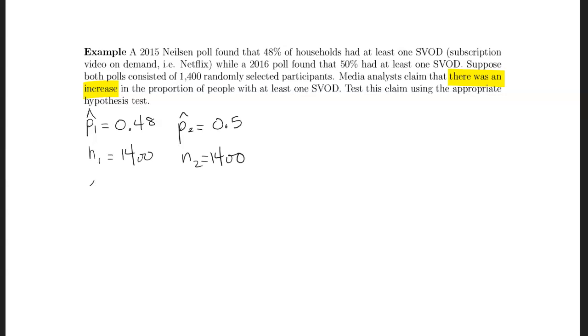One thing we're going to need is the number of successes. Now we weren't told the number of successes, but we can figure that out using the proportions and the sample sizes. So if we know that P hat is X divided by the sample size, then P hat times the sample size equals X. So I'll just multiply these together: 48% of 1,400 is 672, and half of 1,400 is 700.